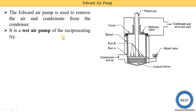It is a wet air pump of a reciprocating type, meaning it removes both air as well as condensate. That is why it is called a wet air pump. Inside the pump, there is a piston that reciprocates, which is why it is called a reciprocating type pump.